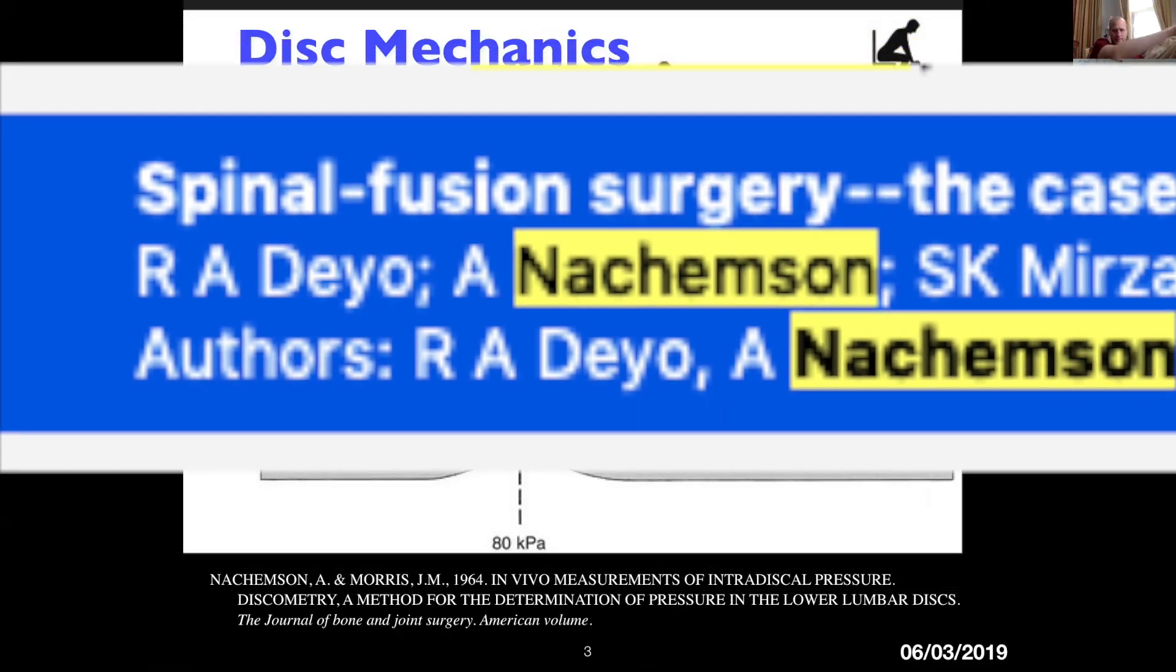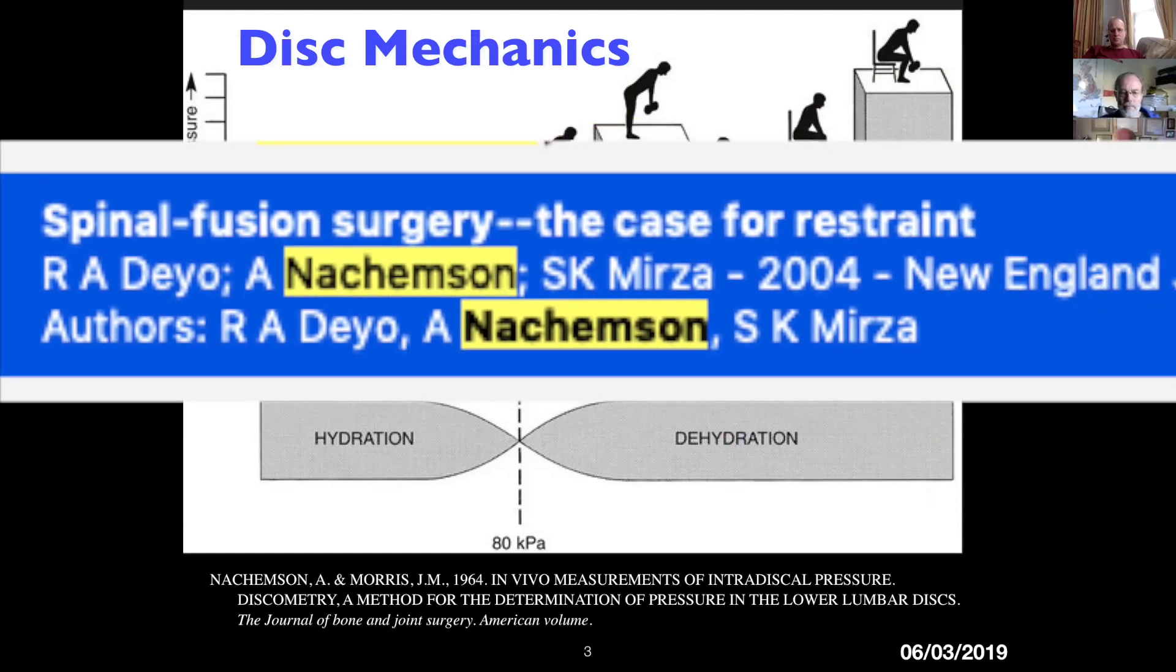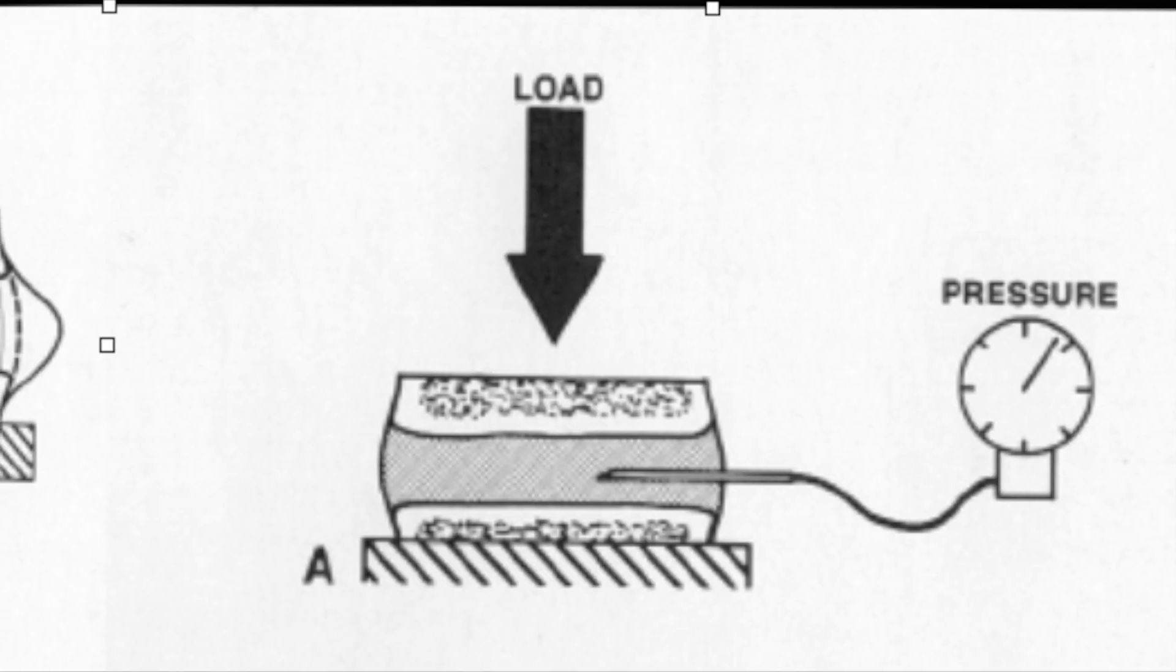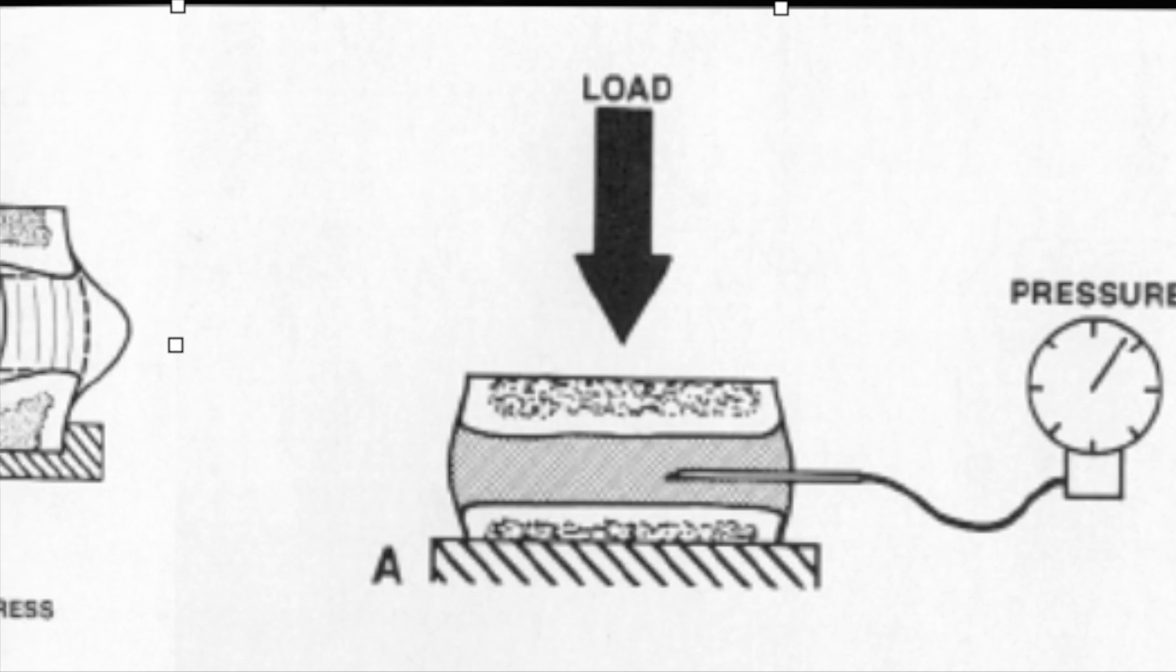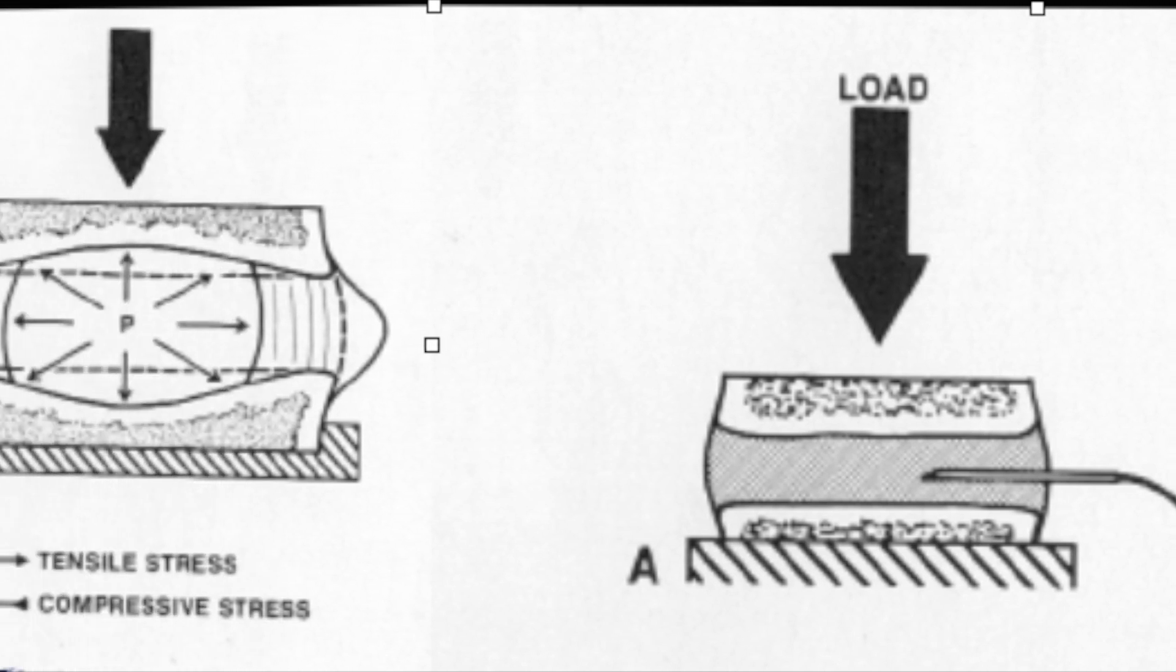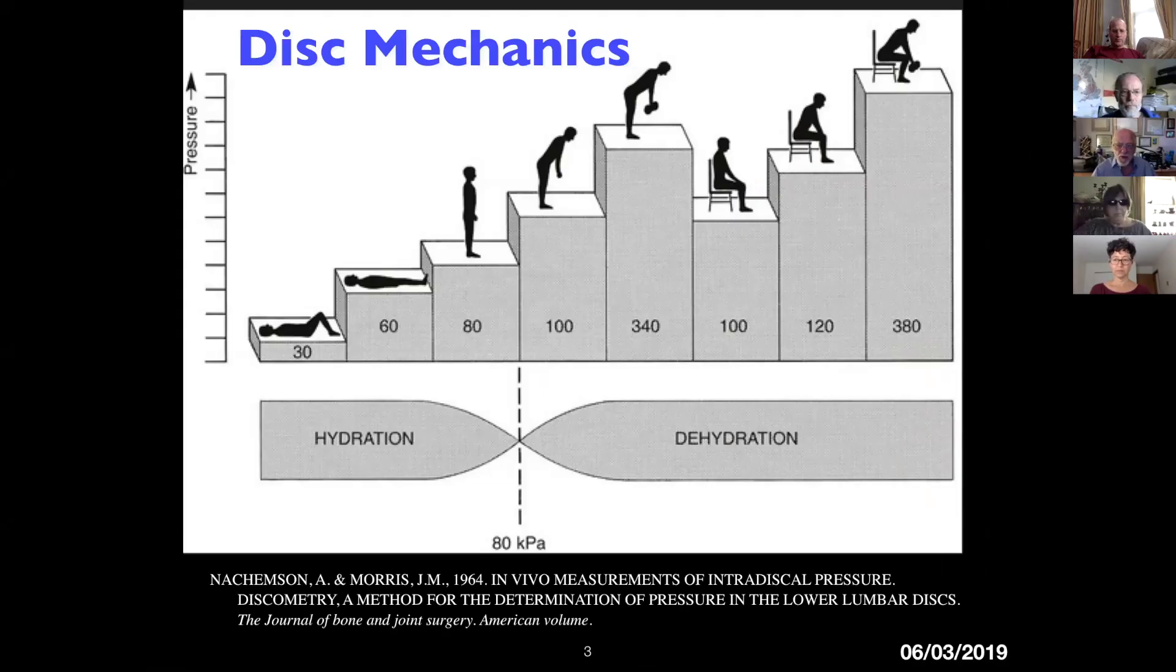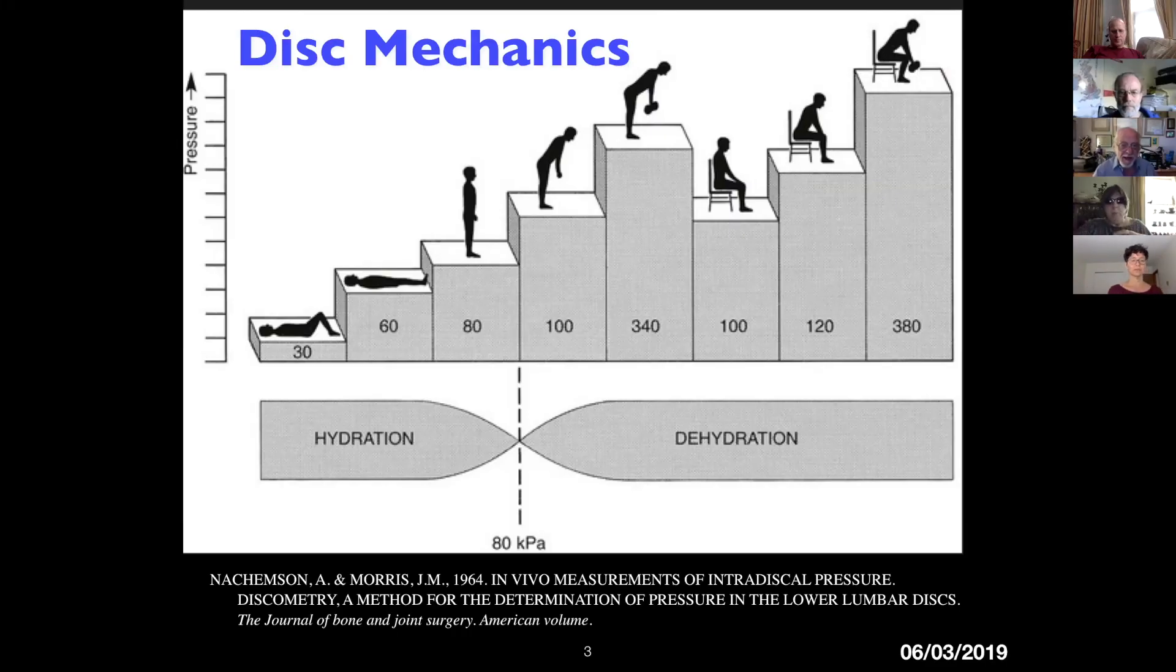He was a pretty good guy who spoke a lot about the overuse of spinal surgery. For this study, he actually put pressure transducers into discs to measure the pressure and showed that when you're recumbent, it's about 30. These are in kilopascals, but you can see the proportion. So lying down is 30 kilopascals, then it's 60, then standing is 80.